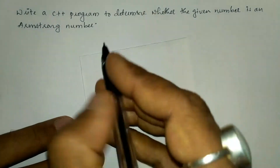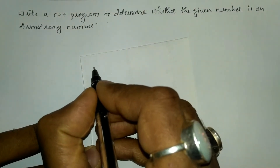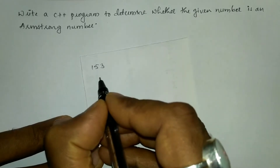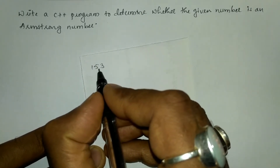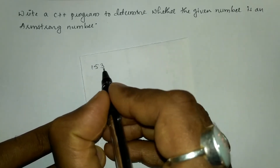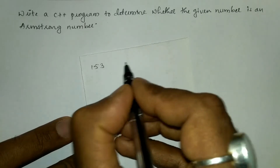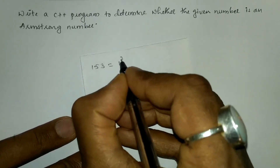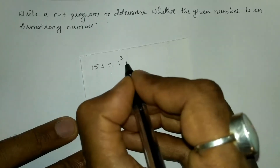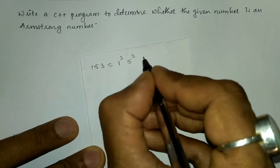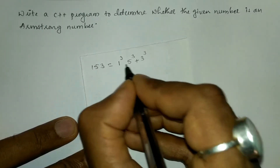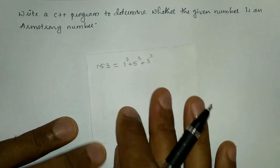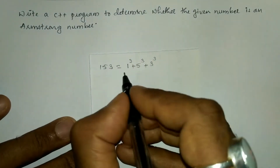So Armstrong number — let us understand what is the meaning of this. If I write any three-digit number, if I make a cube of each of the individual digits and sum them, it must give me the same number. Such numbers are called Armstrong numbers.